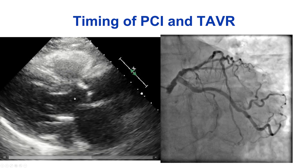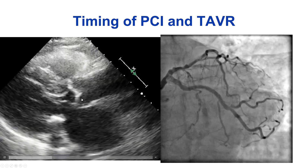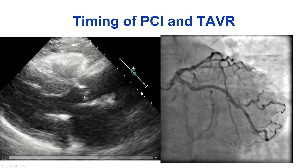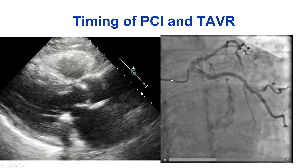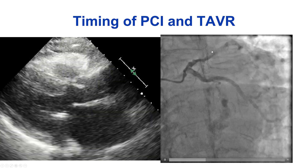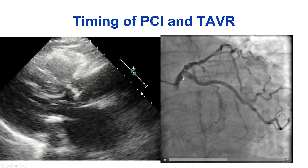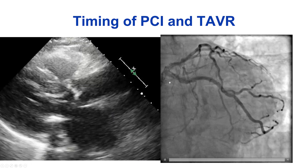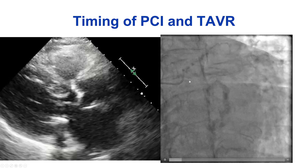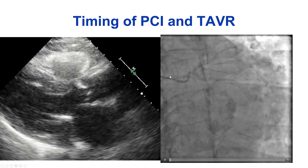This is a patient who has severe aortic stenosis as well as severe left main coronary artery disease. The question is whether TAVR should be performed first, or coronary revascularization first. There are pluses and minuses both ways. The biggest advantage of performing coronary revascularization first is that it avoids any potential difficulties with accessing the coronary artery after TAVR. The disadvantage is that coronary revascularization can be high risk in the setting of severe aortic stenosis.